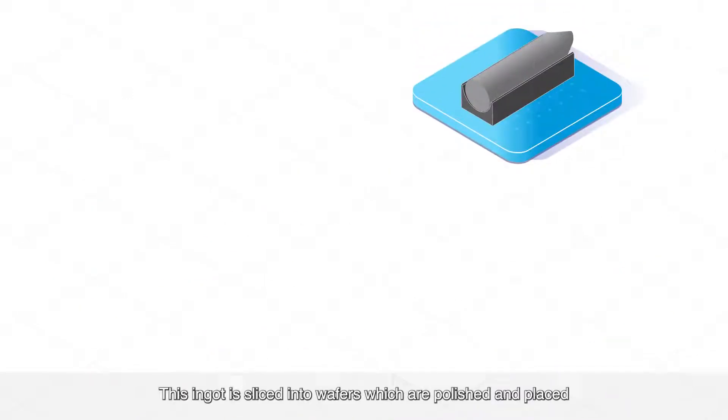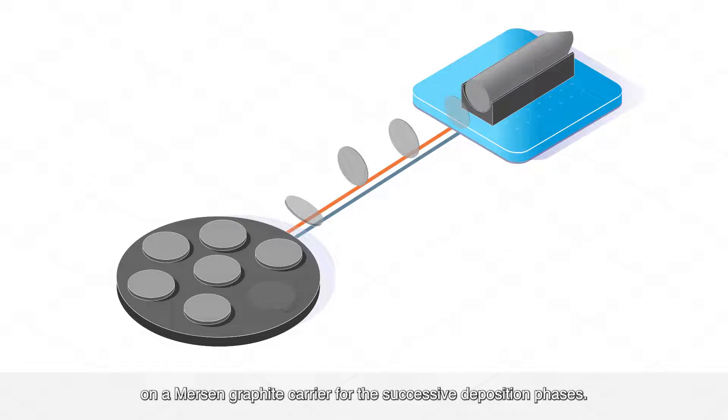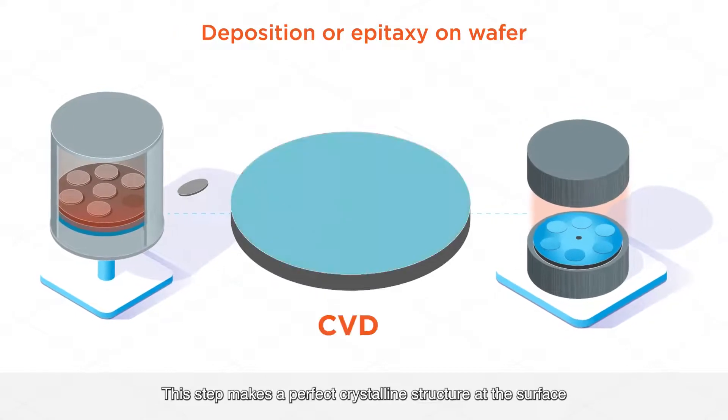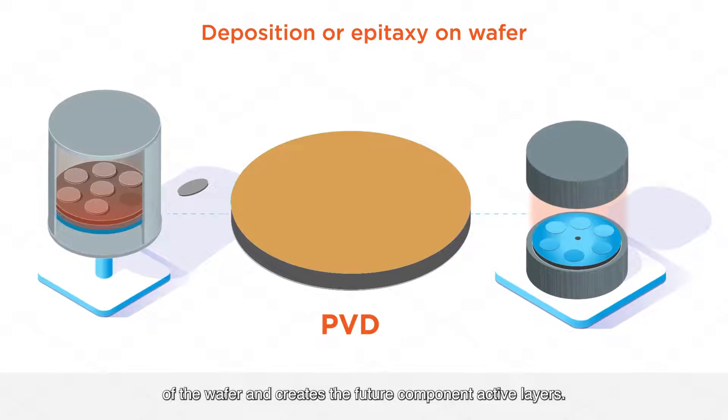This ingot is sliced into wafers which are polished and placed on a Mersin graphite carrier for the successive deposition phases. This step makes a perfect crystalline structure at the surface of the wafer and creates the future component active layers.